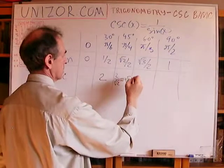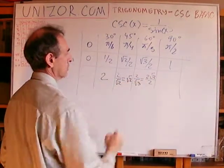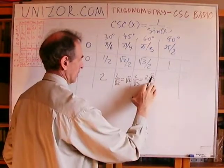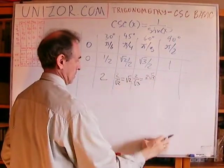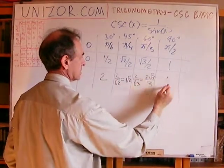This is 2 over square root of 3, which is 2 square root of 3 over 3, sorry. And this is 1.